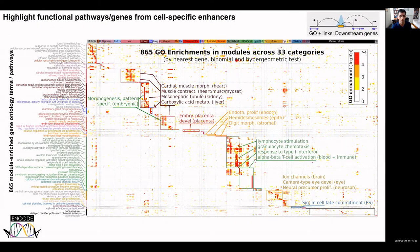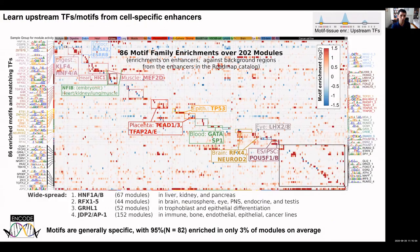These modules are strongly enriched in gene ontology terms for nearby genes, with specific functions associated with multi-tissue active modules and tissue-specific modules such as heart. We also identified 86 different motif family enrichments for the upstream regulation of these enhancer modules. On the website, these group motifs can be separated into individual members.